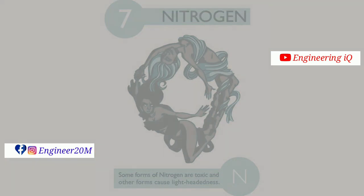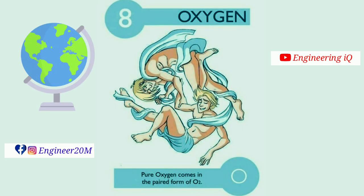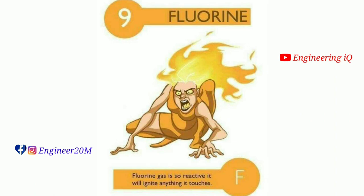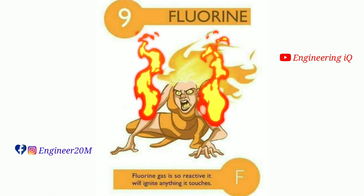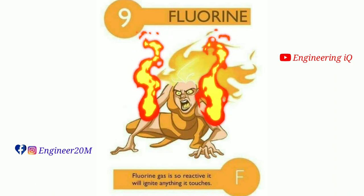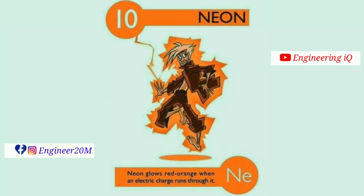Oxygen: atomic number of oxygen is 8. Pure oxygen comes in the paired form O2. It is denoted by O. Fluorine: atomic number of fluorine is 9. Fluorine gas is so reactive it will ignite anything it touches. It is denoted by F. Neon: atomic number of neon is 10. Neon glows red-orange when an electric charge runs through it. It is denoted by Ne.